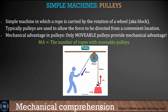A pulley is a simple machine in which a rope is carried by the rotation of a wheel. The mechanical advantage of a pulley is the number of ropes in the movable pulley. The more pulleys you use, the less load you need to apply to lift an object — that's why large concrete blocks can be lifted with very small machines.